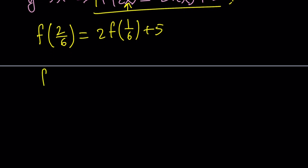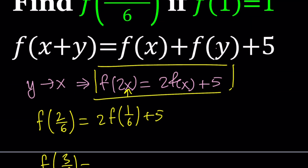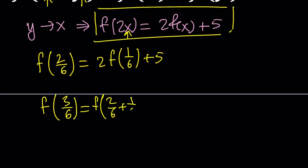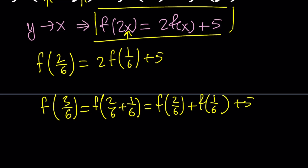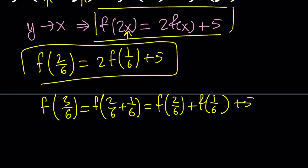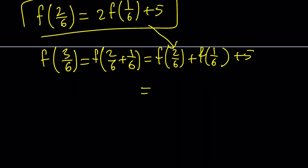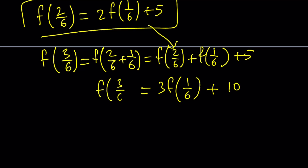Now let's go ahead and try to evaluate f of 3 over 6. We can replace x with 2 over 6 and y with 1 over 6. That gives us f of 2 over 6 plus f of 1 over 6 plus 5. We know f of 2 over 6 can be written as 2f of 1 over 6 plus 5, so plugging it in gives us 2f of 1 over 6 plus f of 1 over 6, which is 3 times f of 1 over 6 plus 5. With the two fives combined, f of 3 over 6 equals 3 times f of 1 over 6 plus 10.